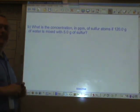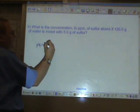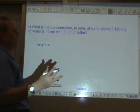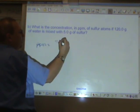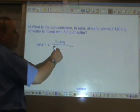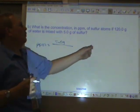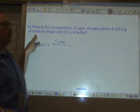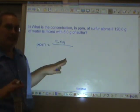This next problem is worded a little bit different from the previous problem. Again, parts per million is equal to grams of solute. Well, here's our solute here, 5.0 grams of sulfur, divided by the total grams of solution. Now, if this said we had 120 grams of sulfur water, then I'd just pop 120 grams down here. But it doesn't say that.